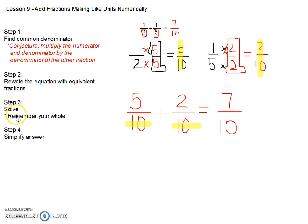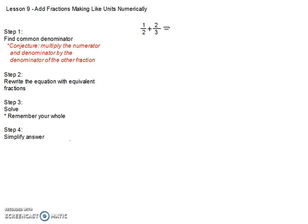We did step 3, and we also remembered our whole in talking about how everything needs to stay 10. Step 4 is to simplify our answer, and if you remember back a couple weeks ago, we talked about dividing by something that is equal to 1. But in this case, we cannot divide both numbers by the same number, so this 7 tenths is actually our simplified answer. All right, let's work with this problem.